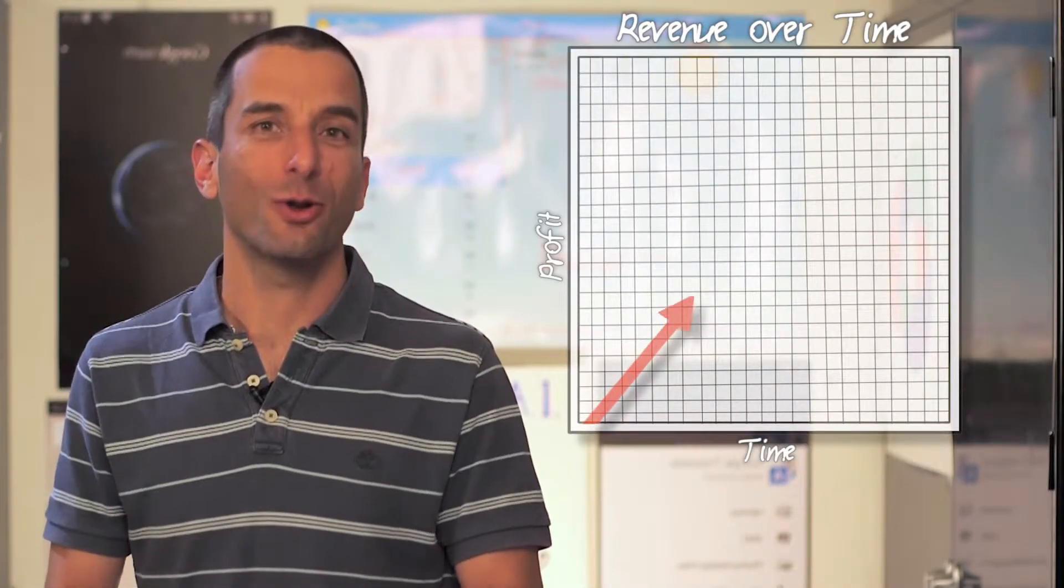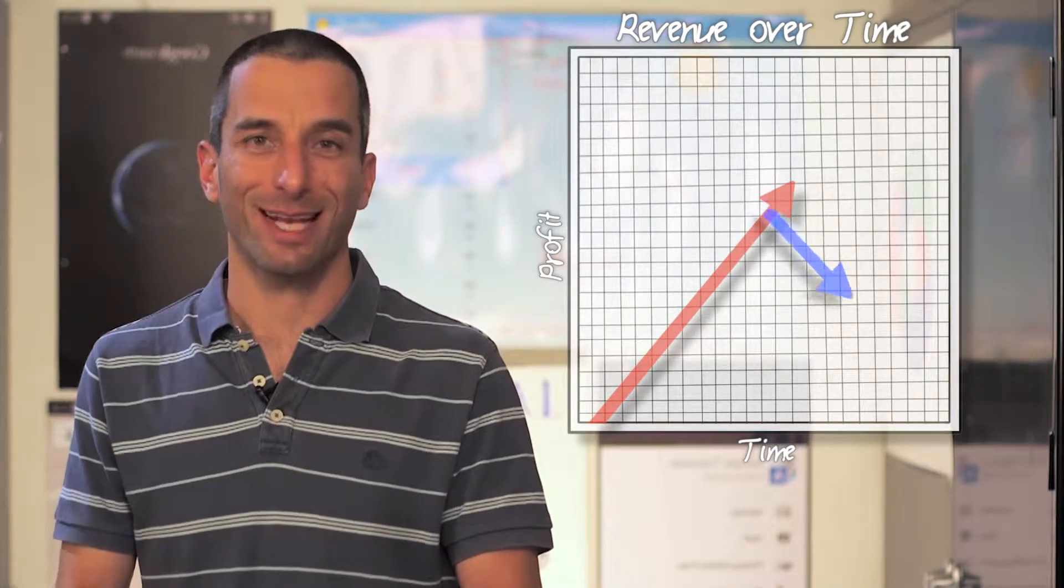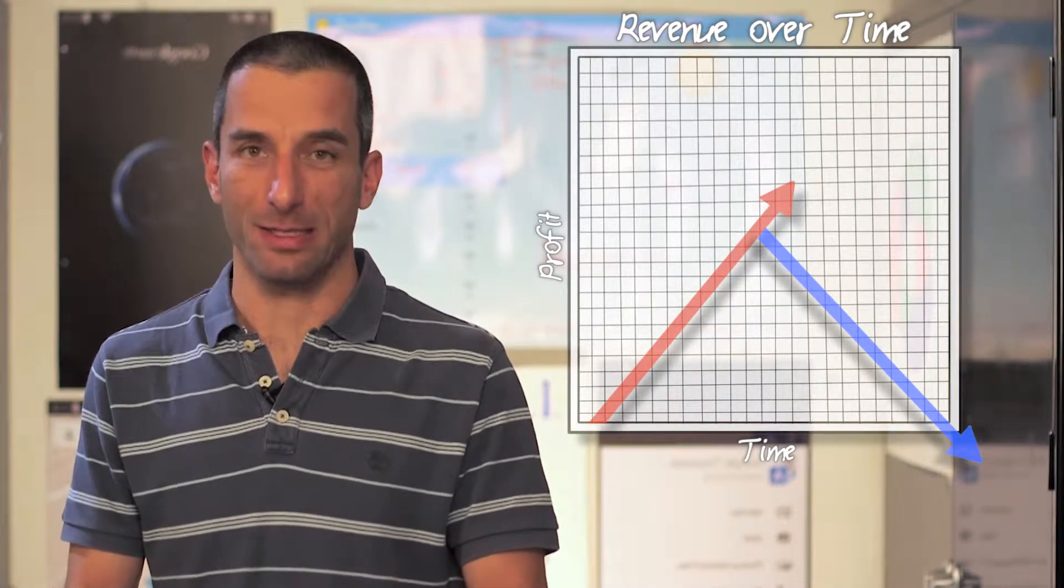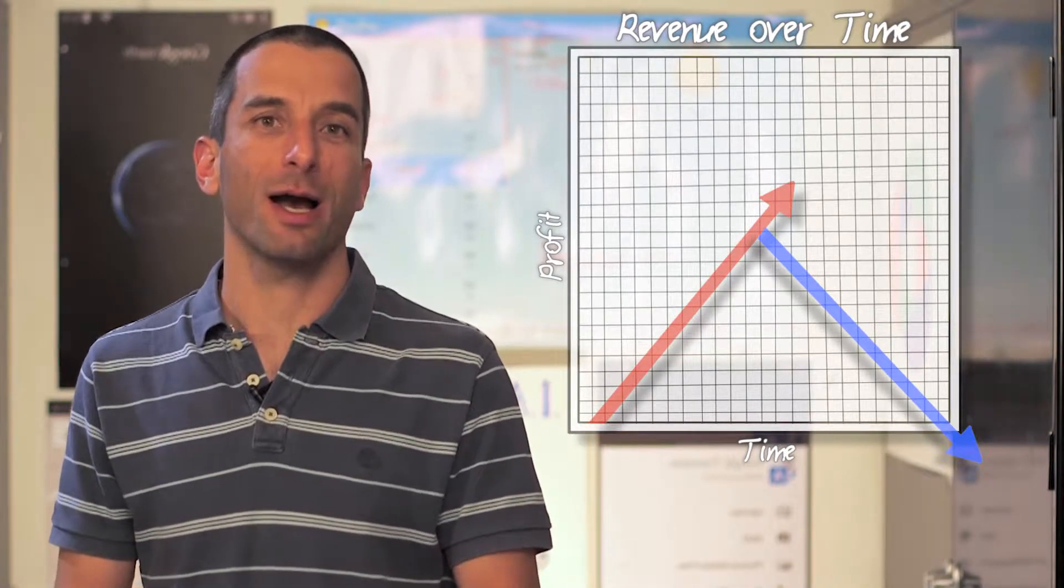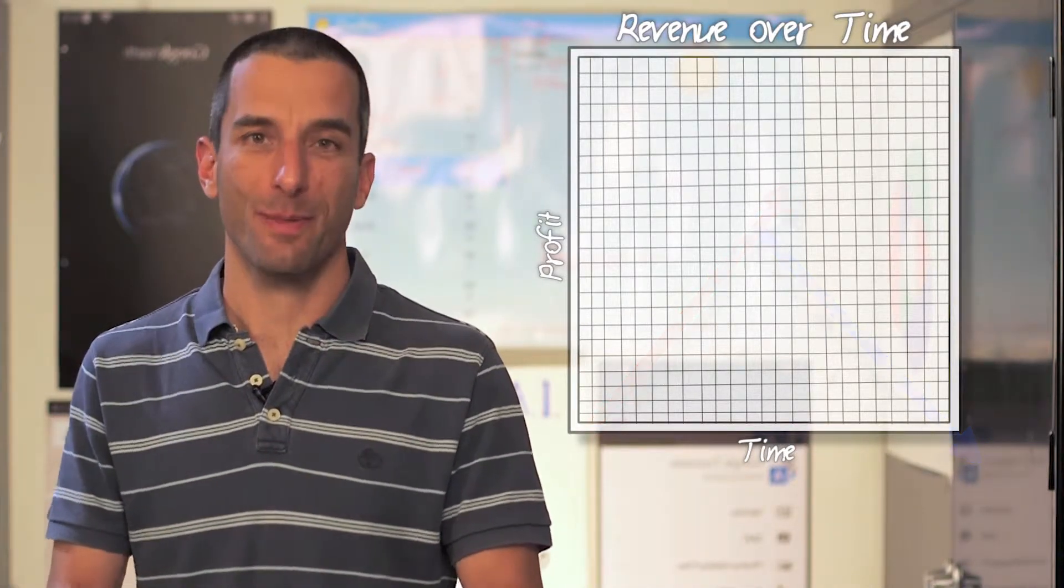If the numbers show you are not going up and to the right, but rather declining, you need to take action fast. However, you can only do it if you have meaningful KPIs that you are constantly measuring.